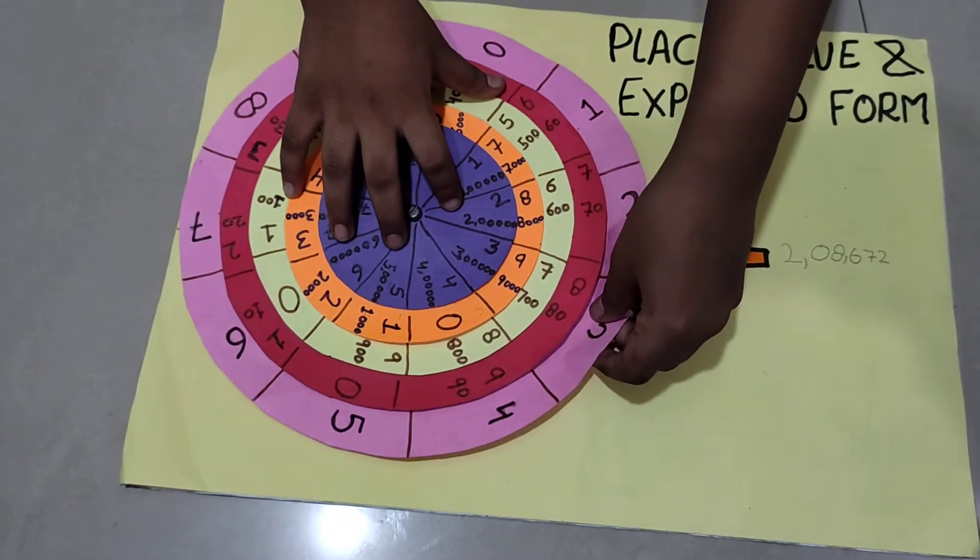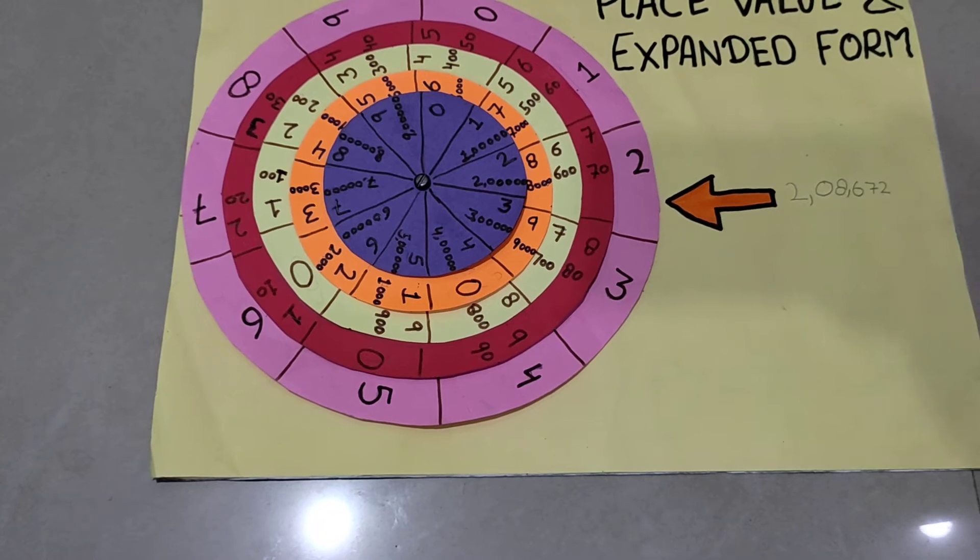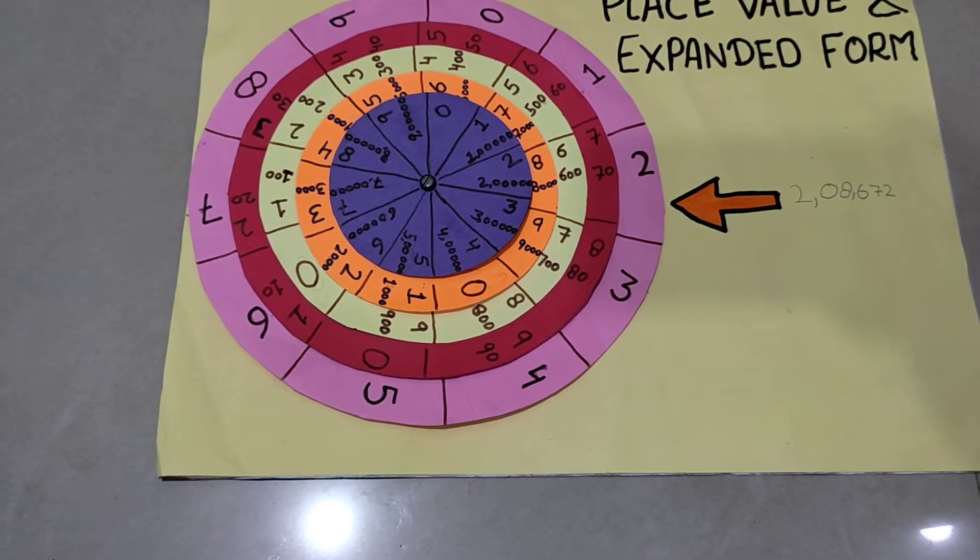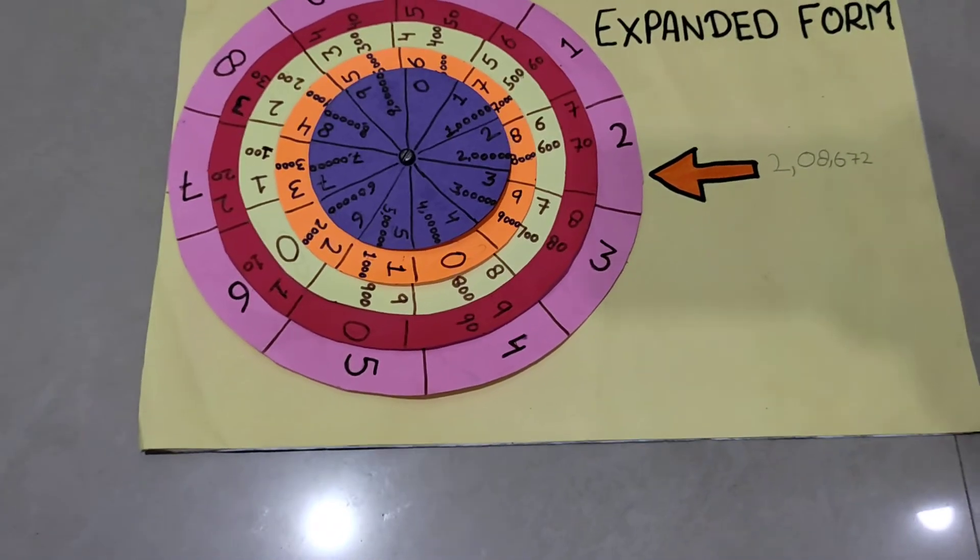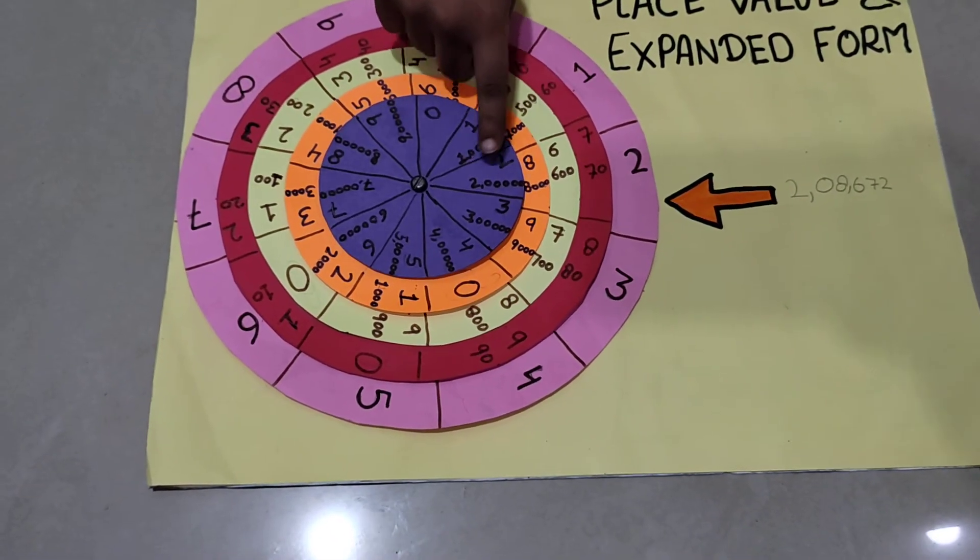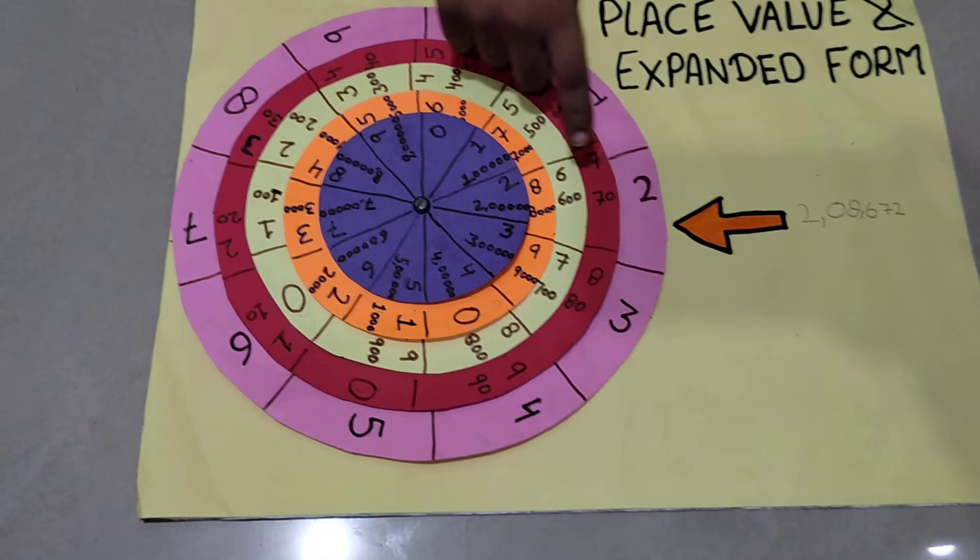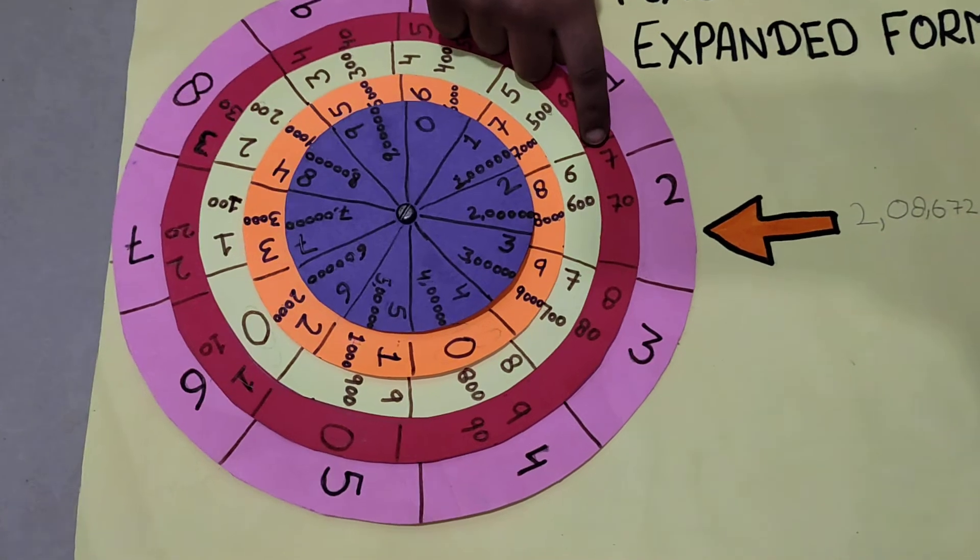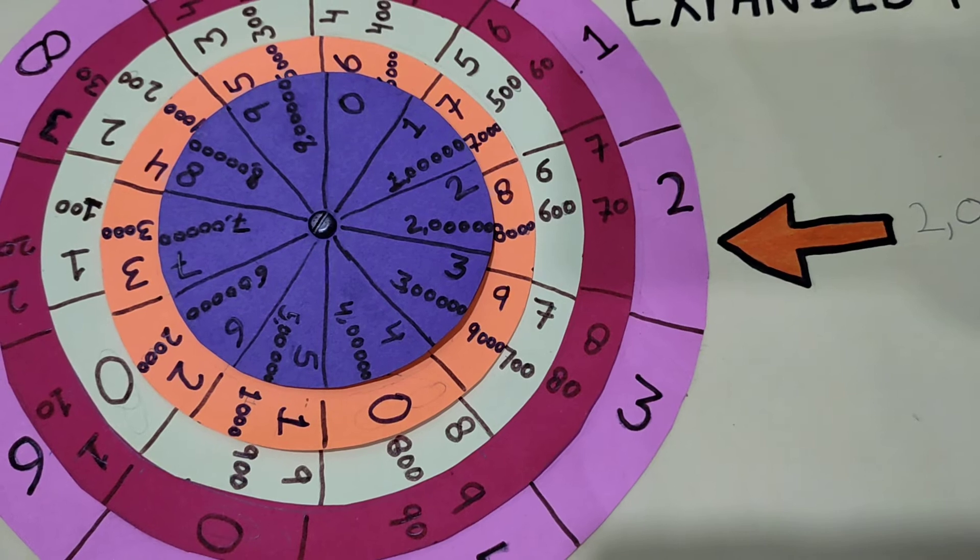So here, we have got the expanded form of 2 lakh 8672. The expanded form of 2 lakh 8672 is 2 lakh plus 8000 plus 600 plus 70 plus 2 equals to 2 lakh 8672.